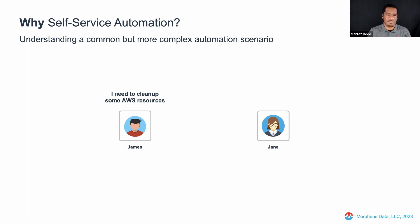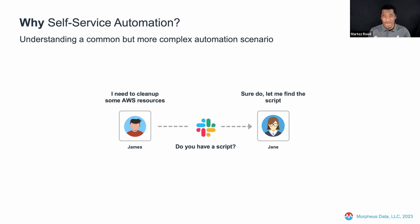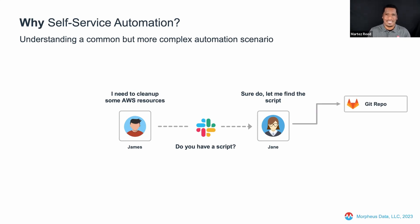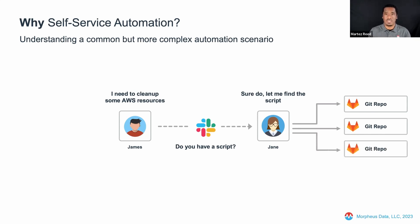James pings Jane via Slack asking: do you have a script for this? What Jane then does is say sure, let me find the script. Jane wrote this script a couple of weeks ago and maybe she doesn't have the best organizational skills. She goes to the first Git repo — not the right one. She goes to another Git repo — still not finding it. She goes to a third Git repo and finds the script. She sends James the link to that repo. James does have the access, but he didn't know where Jane put the script. So now James clones the Git repo to his laptop and is ready to go.